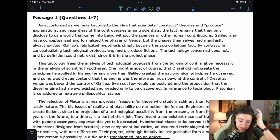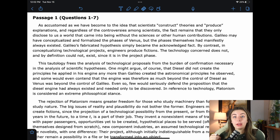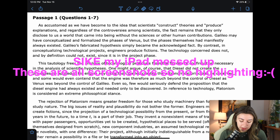The author is saying, y'all think that scientists build all this stuff, produce, construct these theories and explanations. But really, they were there before. They just kind of discovered them. Galileo may have conceptualized and formalized the phases of Venus, but the phases themselves had manifestly always existed. Just adding on. Galileo's fabricated hypothesis simply became the acknowledged fact. By contrast, in conceptualizing technological projects, engineers produce fictions. I'm going to highlight this part that says engineers produce fictions just because I feel like that's a main point that the author's trying to drive home.